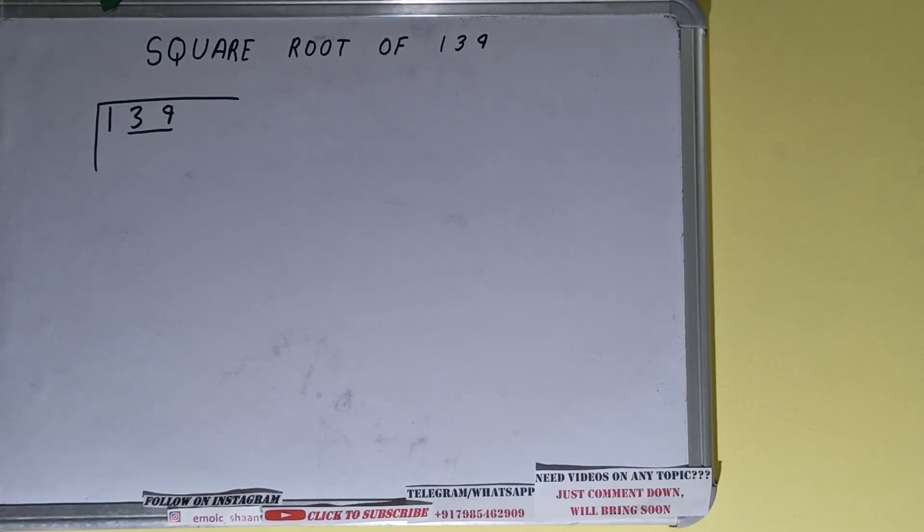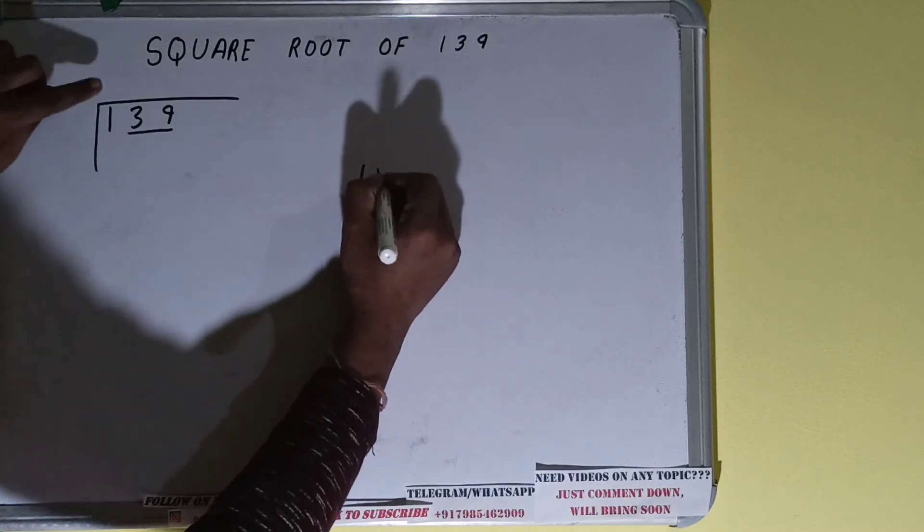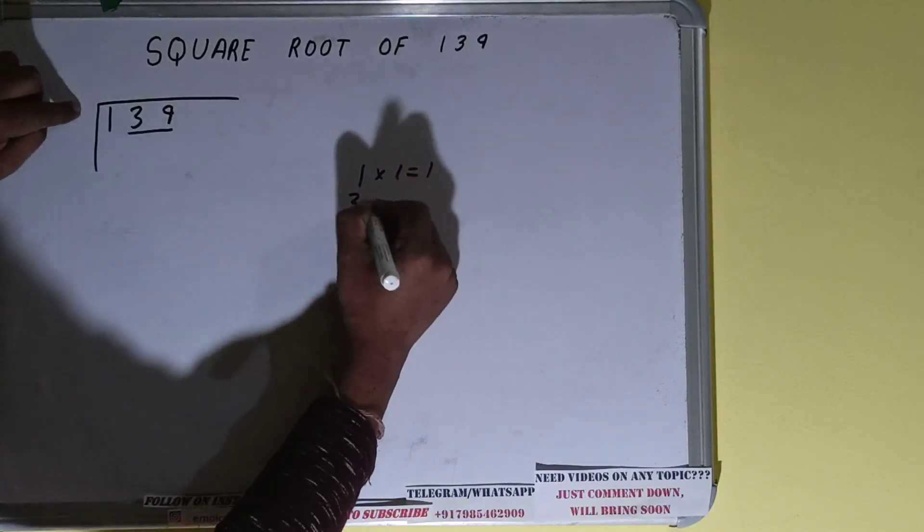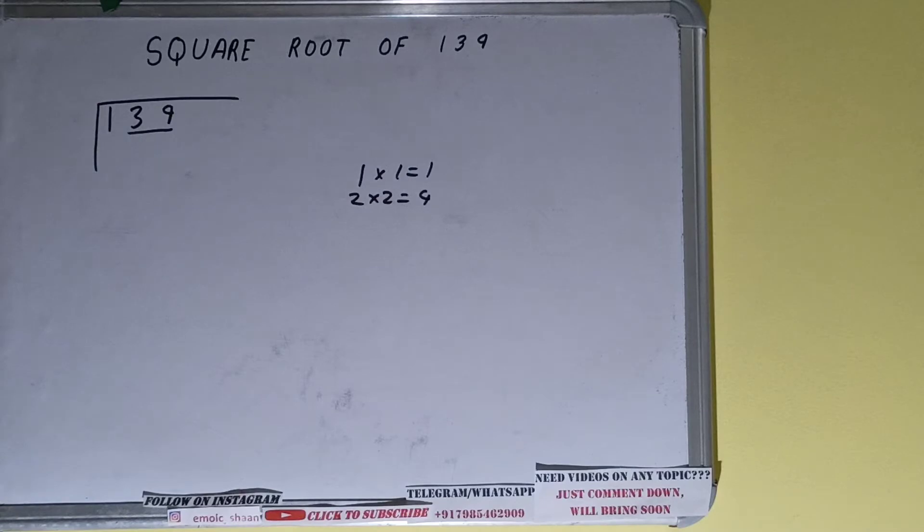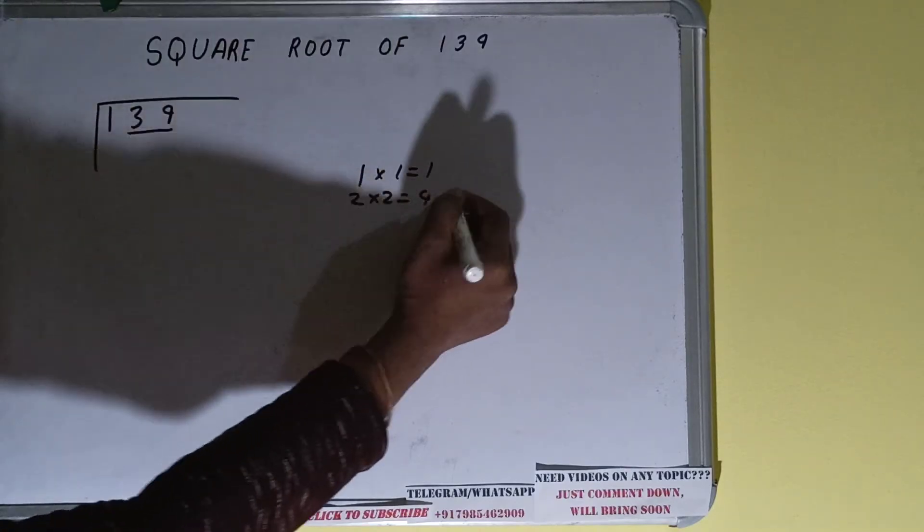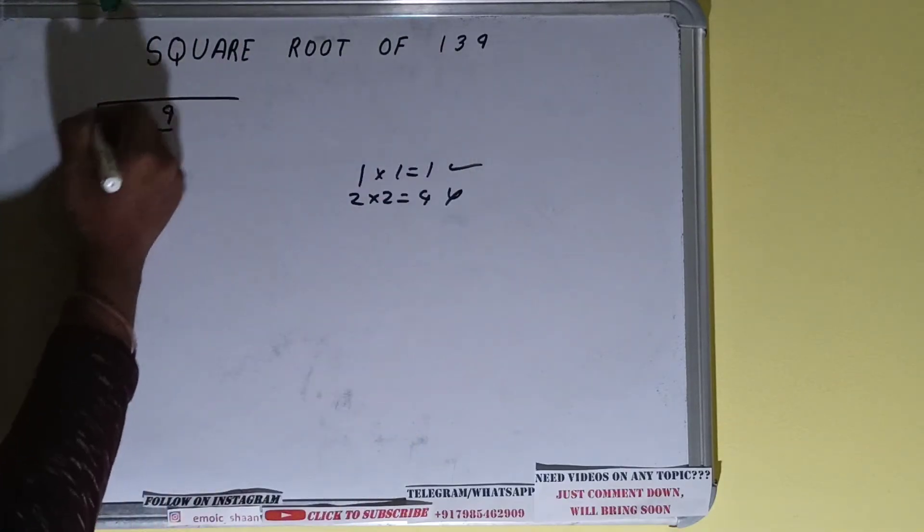The rule is whatever number we place here, we have to place here also. If we place one here and one here it will give one. If we place two here and two here it will give four, so we cannot use four because it's greater than one. So we have to go with one. One here and one here will give one.